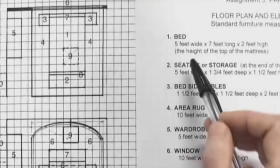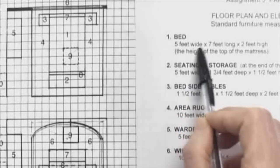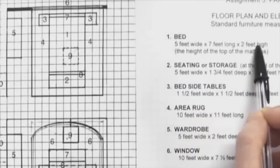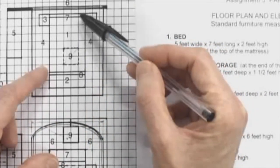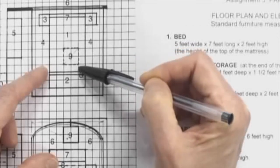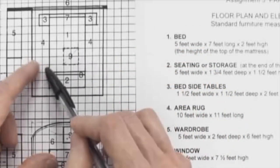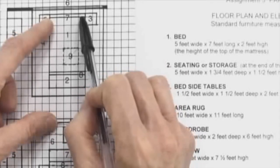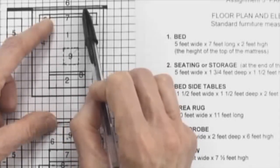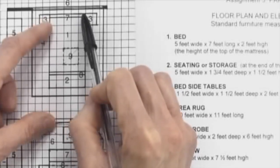If we look at the bed, for example, I've given you five feet wide by seven feet long and two feet high. So if you look at the floor plan, if you count the boxes, the mattress itself is that size and that wide. But there's also the headboard.